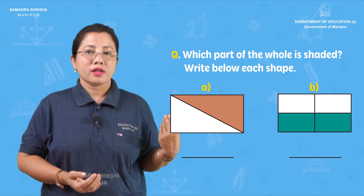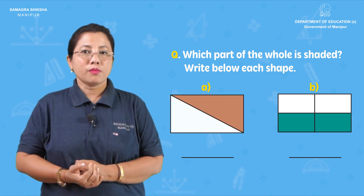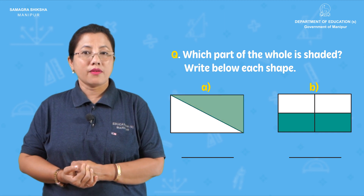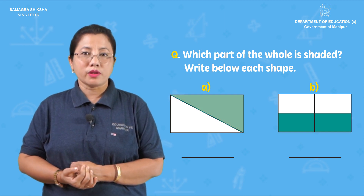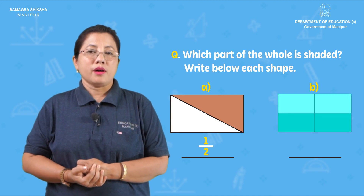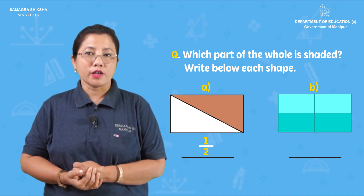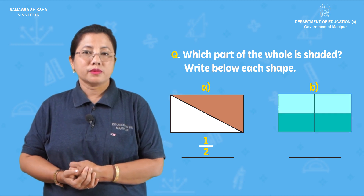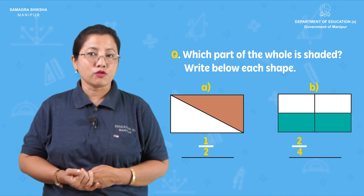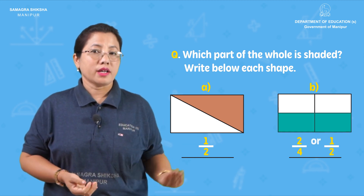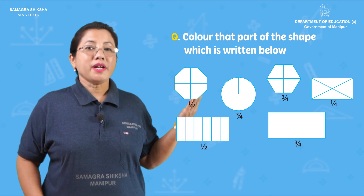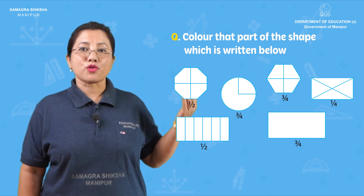First, what is the question? What is the diagram? What is the shaded portion? What do you say? Half. The second diagram is 1 upon 2. The second diagram is 2 by 4, which is equal to 1 by 2.